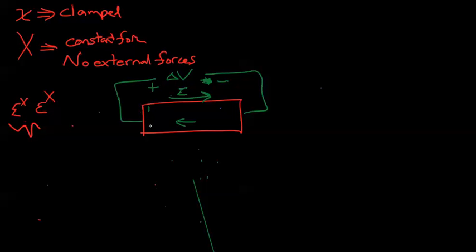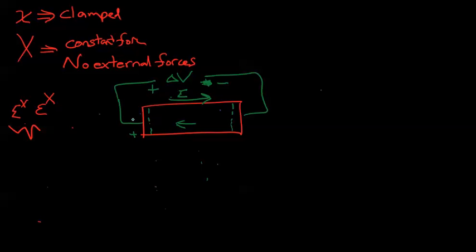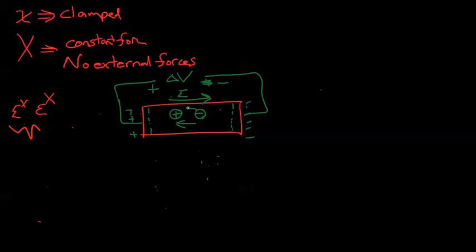This electric field will cause the material to shrink. It will also cause charges to appear — positive charges on one side and negative charges on the other. The molecules inside reorient accordingly. Originally the dipole is facing one way, and both charges try to change positions, causing the material to get smaller.